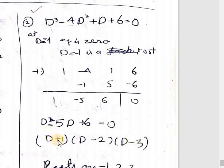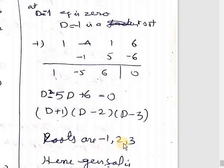So the roots we have: one root was m₁ = -1. From D - 2 = 0, we get D = 2. And D = 3. So the roots are -1, 2, 3. m₁ = -1, m₂ = 2, and m₃ = 3.